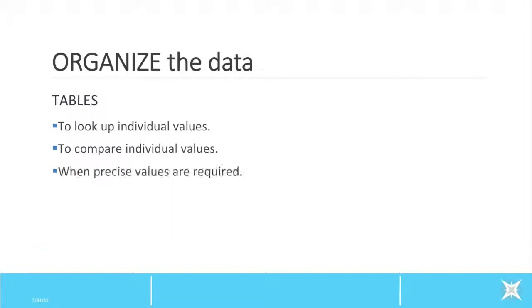Step 1: Organize the data. Tables interact primarily with our verbal system. This means we process information in a sequential fashion, either reading down columns or across rows. Tables are most useful to look up individual values, compare individual values, and when you need to show precise values.